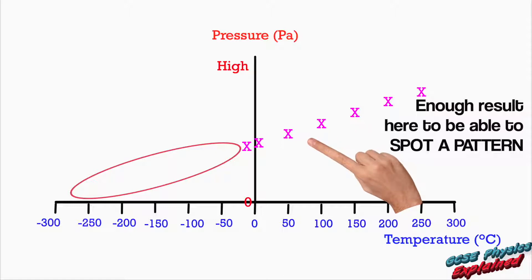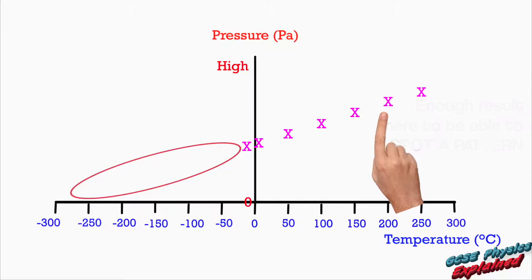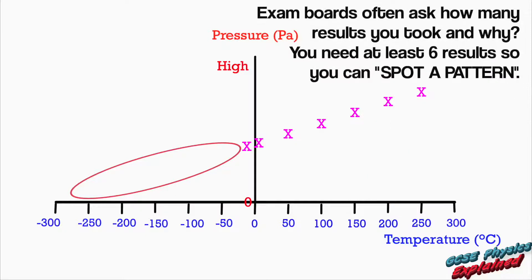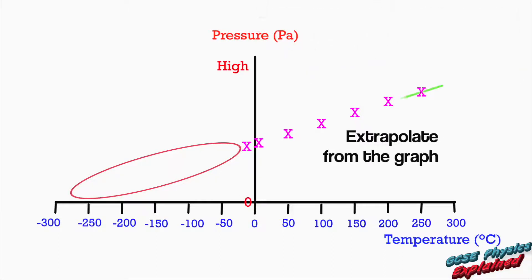But that's all right because he had enough results by then to be able to spot a pattern. As I say to my students, when you plot a graph, you need at least six results so you can spot a pattern. Once you can spot a pattern, you can extrapolate from the graph, in other words, continue to follow the pattern and find out more results without actually testing everything.